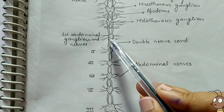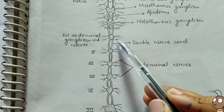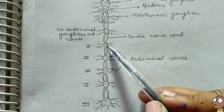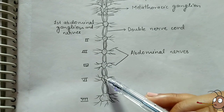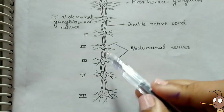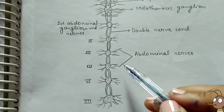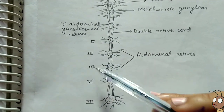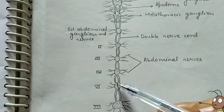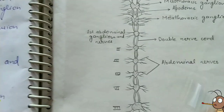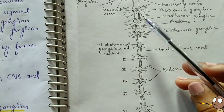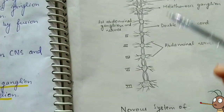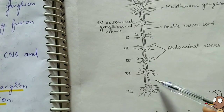The abdominal ganglia are the 1st, 2nd, 3rd, 4th, 6th, and 7th. The 5th abdominal ganglion is absent — there is no ganglion present in the 5th segment. The thoracic ganglia are larger in size, and the last abdominal ganglion is also larger in size, while the rest of the ganglia are smaller.